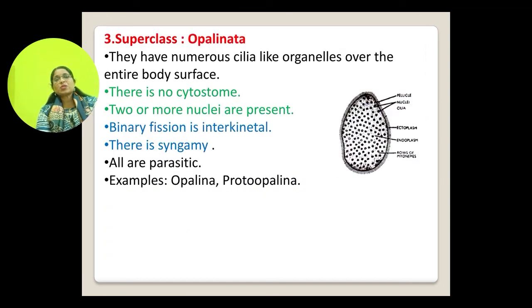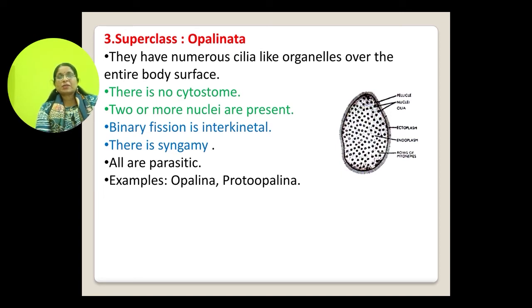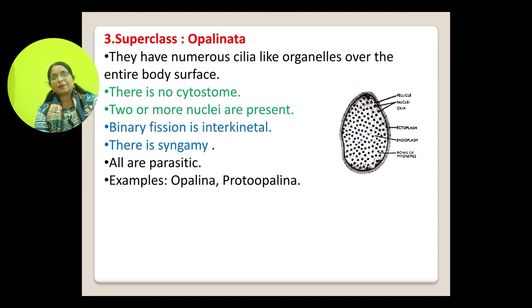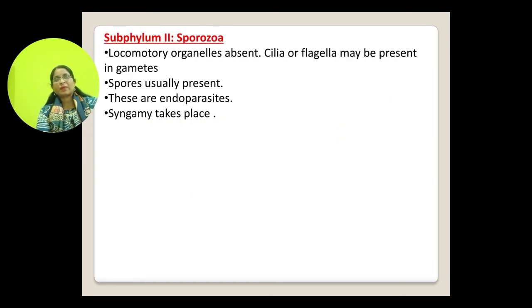Superclass Opalinata: they have numerous cilia-like organelles over the entire body surface, there is no cytostome, and two or more nuclei are present. They are all parasitic; an example is Opalina.